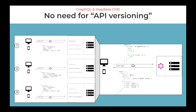GraphQL doesn't have this issue. Since GraphQL's calling and response interface is a query language, consumers describe what they want and how they want the response to look when it returns. This means there's no change to this calling convention as the backend system mutates. Thus, there's no need to version APIs. This is a big deal because it simplifies what we need to manage and lowers technical debt.